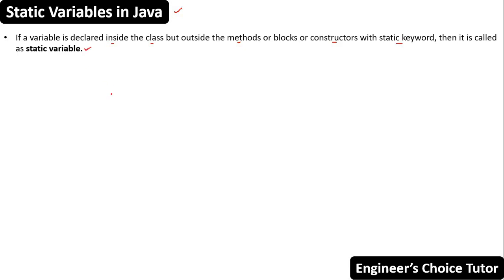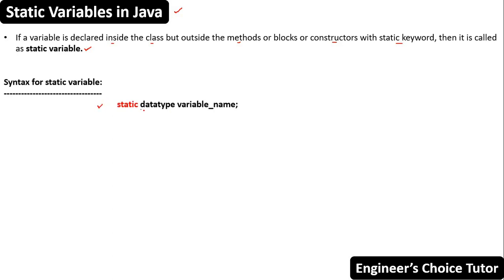Now let's see the syntax for a static variable. This is the syntax for a static variable — it is a general variable declaration but with a static keyword added. The variable is declared with the static keyword, that is the reason this variable is called a static variable.